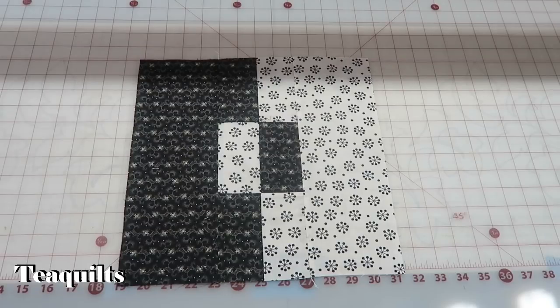Here is our completed mirror block. It should square up to 12 and one half inches unfinished and when it's sewn into a quilt top it will be 12 inch finished.